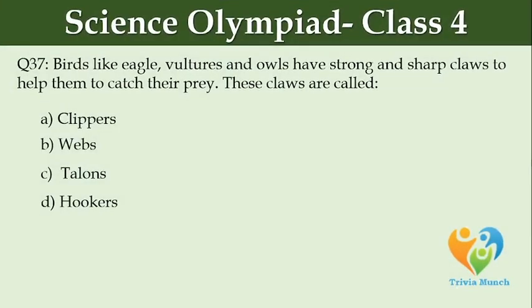Birds like eagle, vultures and owls have strong and sharp claws to help them catch their prey. These claws are called: Option A: clippers, Option B: webs, Option C: talons, Option D: hookers.